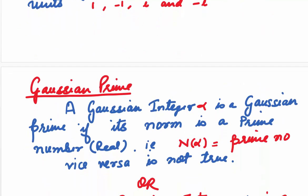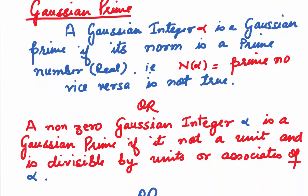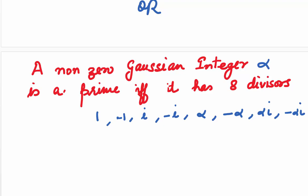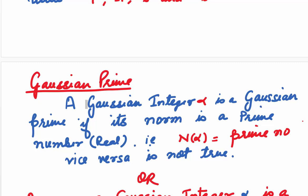Now let us define Gaussian primes. A Gaussian integer alpha is a Gaussian prime if it has a norm which is a prime number. In other words, if N(alpha) is a prime number, we say the Gaussian integer is a Gaussian prime. Alternatively, a non-zero Gaussian integer alpha is a Gaussian prime if it is not a unit and is divisible only by units or associates of alpha. A non-zero Gaussian integer alpha is prime if and only if it has exactly eight divisors: 1, minus 1, i, minus i, alpha, minus alpha, alpha·i, and minus alpha·i. Remember, the converse is not true — every real prime is not necessarily a Gaussian prime.